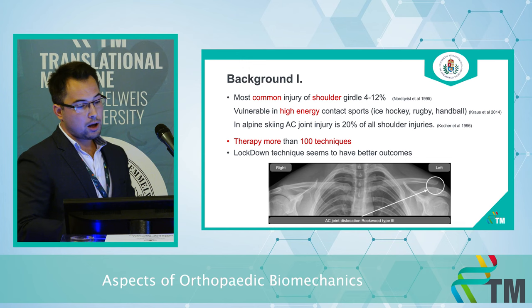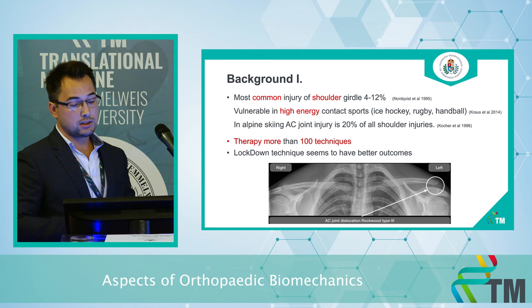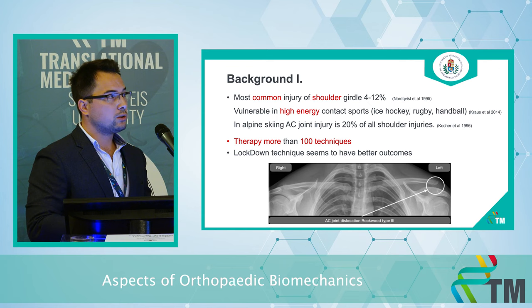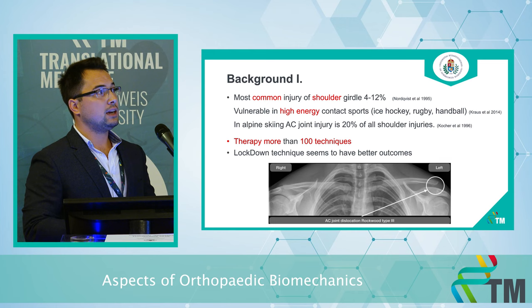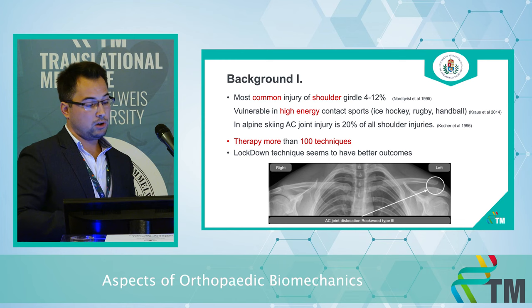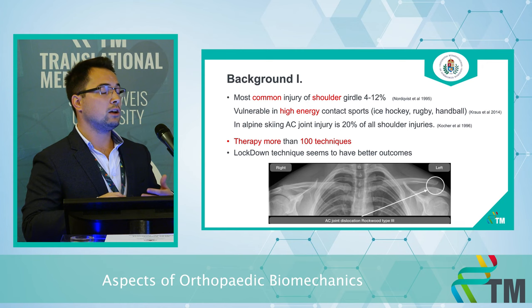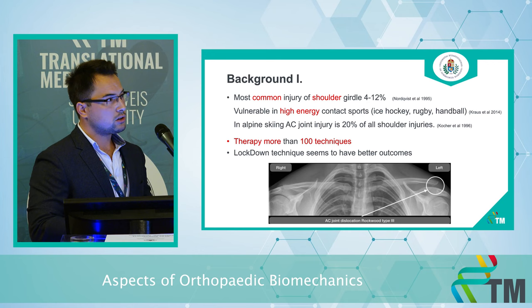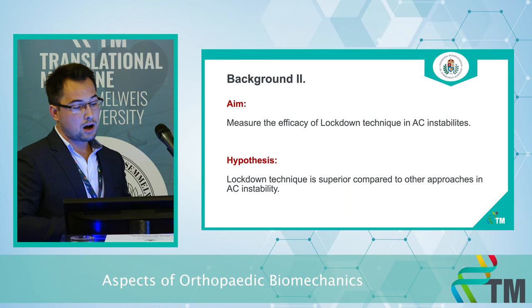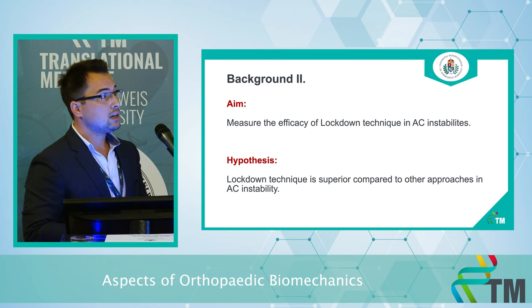Acromioclavicular dislocations are common in the shoulder girdle and occur during high-energy sports and traumas, mostly in ice hockey, rugby, handball, and snow sports. There are approximately 100 surgical techniques for dislocation type 3 or above according to the Rockwood classification. We focus our aim on the lockdown technique itself, which makes anatomical reconstruction with a synthetic ligament. On the picture you can see a type 3 dislocation of the left acromioclavicular joint. Our aim is to measure the efficacy of the lockdown technique, and our hypothesis is that this technique is superior to other techniques.